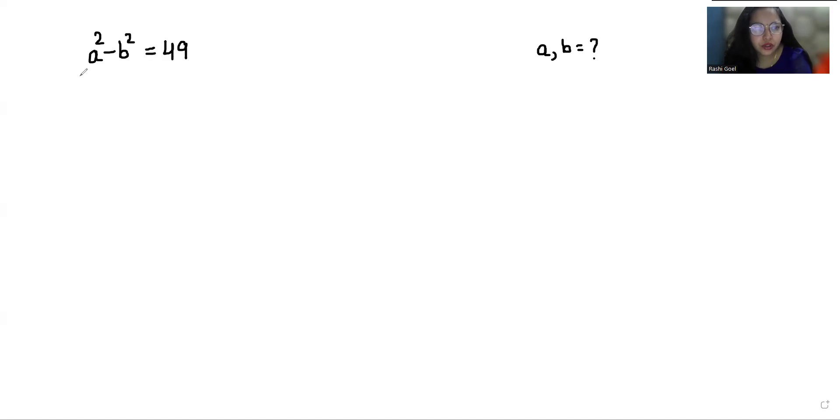From the left-hand side, I'm going to use the identity a² - b² = (a+b)(a-b) = 49. Now I'm going to write the factors of 49.